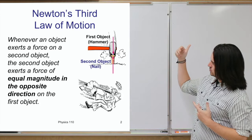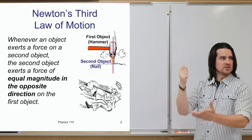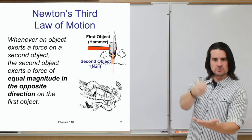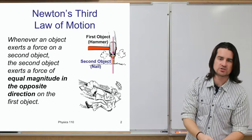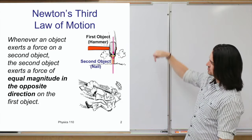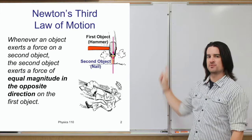For an example, when you swing a hammer and hit a nail — the hammer is the first object. When it hits the nail, it exerts a force pushing down on the nail. It turns out the nail exerts an equal magnitude of force, but in the opposite direction, back up onto the hammer. So the hammer comes down and exerts a force downward; the nail reacts by exerting an equal amount of force upwards.